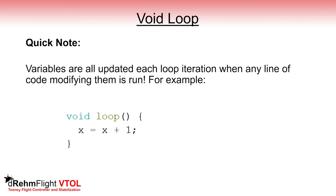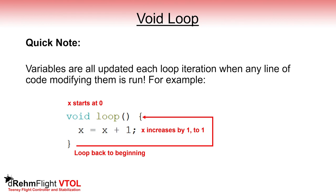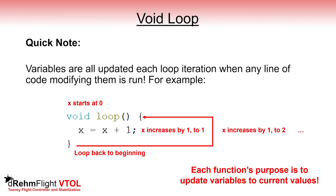A quick note about how the code fundamentally works. Now that we're talking about the void loop, this code is run again and again continuously. Variables that we've defined are updated each loop iteration when any line of code modifying them is run. So if we have a variable x that starts at 0 and we run a line of code in the void loop, x will increase to a value of 1, then loop back and increase to 2, and so on. Each function run in the void loop is meant to update variables to their most current value, depending on measurements from the IMU and inputs from the receiver.